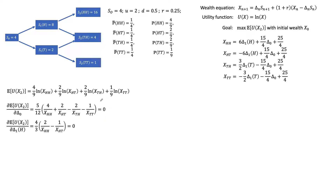We then take partial derivatives with respect to delta_1(H) and delta_1(T) as well. At this point you notice an issue: this gives us 3 equations but we have 4 unknowns — delta_0, delta_1(H), delta_1(T), and one more. So we need to find a 4th equation in order to solve for the optimal terminal wealth.